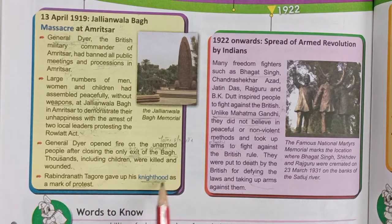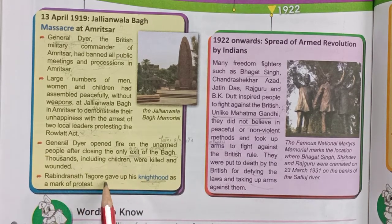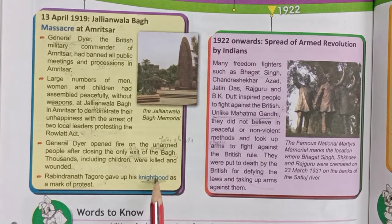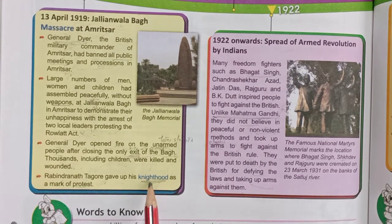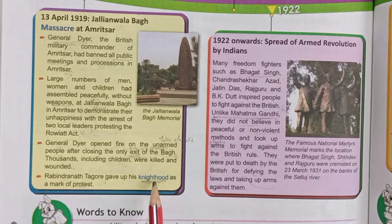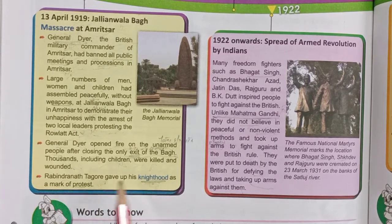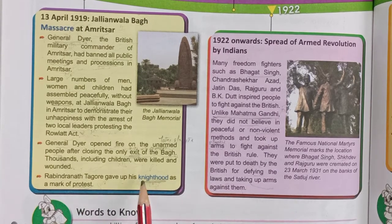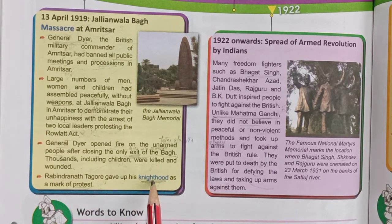Rabindranath Tagore gave up his knighthood as a mark of protest. The knighthood was an honor given by the British king or queen, which gave a person the title of 'Sir.' As a protest in solidarity, Tagore returned this honor to the British.